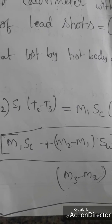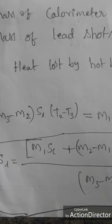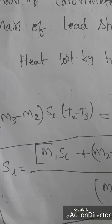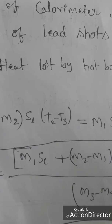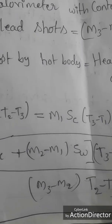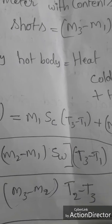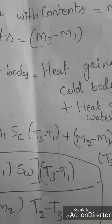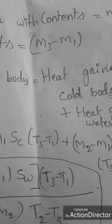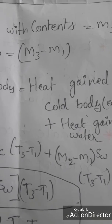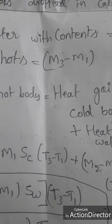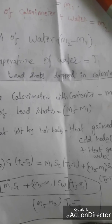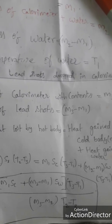Substitute the values into the formula. You can measure the specific heat of the lead shots — SL equals the value obtained using this formula. By using this formula, the specific heat of the lead shots SL can be easily determined.